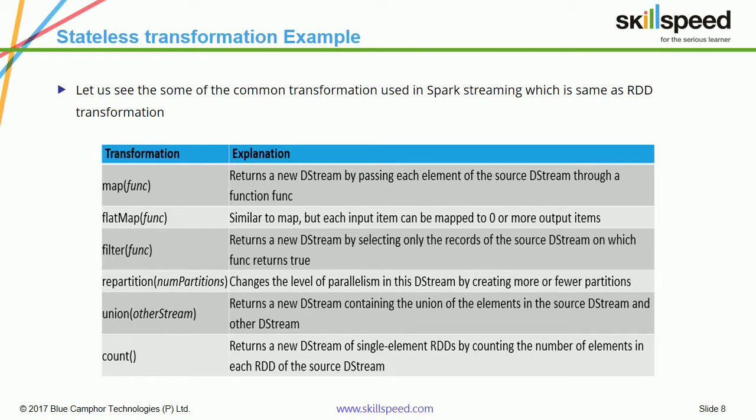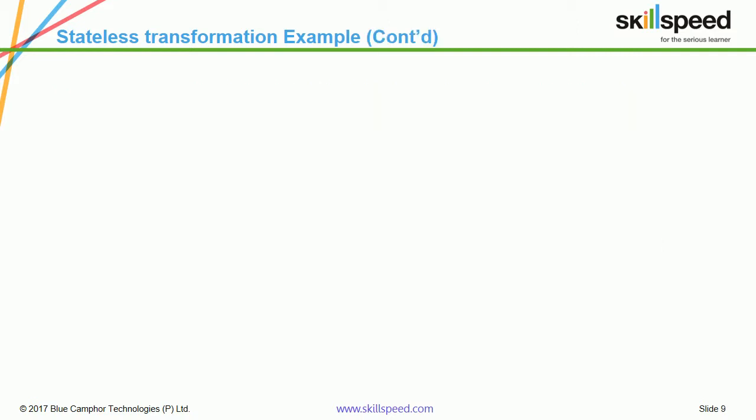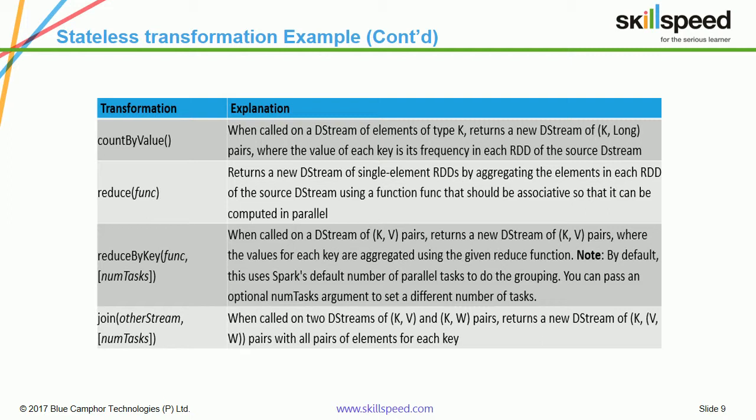Here is a list of functions available for stateless transformation. These functions are very similar to what we explained in the basic RDD operations. The only difference is that the function will be applied on a D-Stream rather than an individual RDD, and the result will be another D-Stream. In the case of RDDs, transformations were applied per RDD and the result was a new RDD; here the result is a new D-Stream. We have map, flatMap, filter, repartition, union, count, countByValue, reduce, reduceByKey, and join.